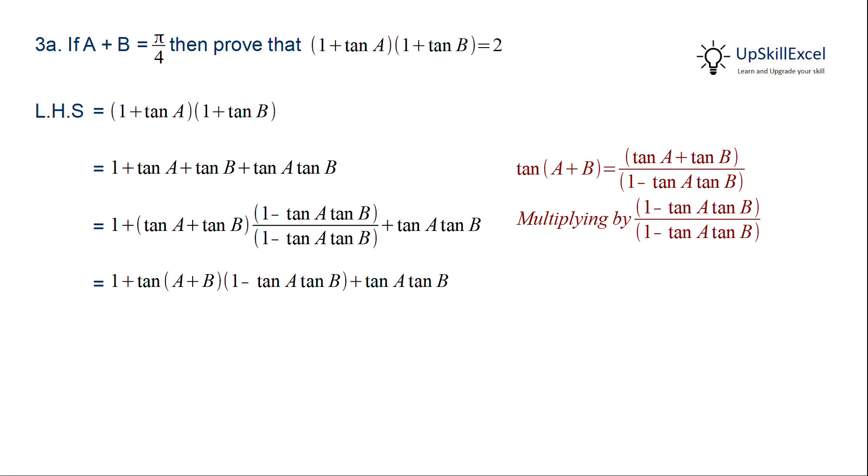And then we can replace this by tan(A + B). Now we are given that A + B is equal to π by 4 and we know that tan π by 4 is equal to 1. So tan(A + B) can be replaced by 1, giving us 1 + 1 - tan A tan B + tan A tan B. Tan A tan B has a minus and plus sign, so they get cancelled out and we get the result as 2, which is the RHS.